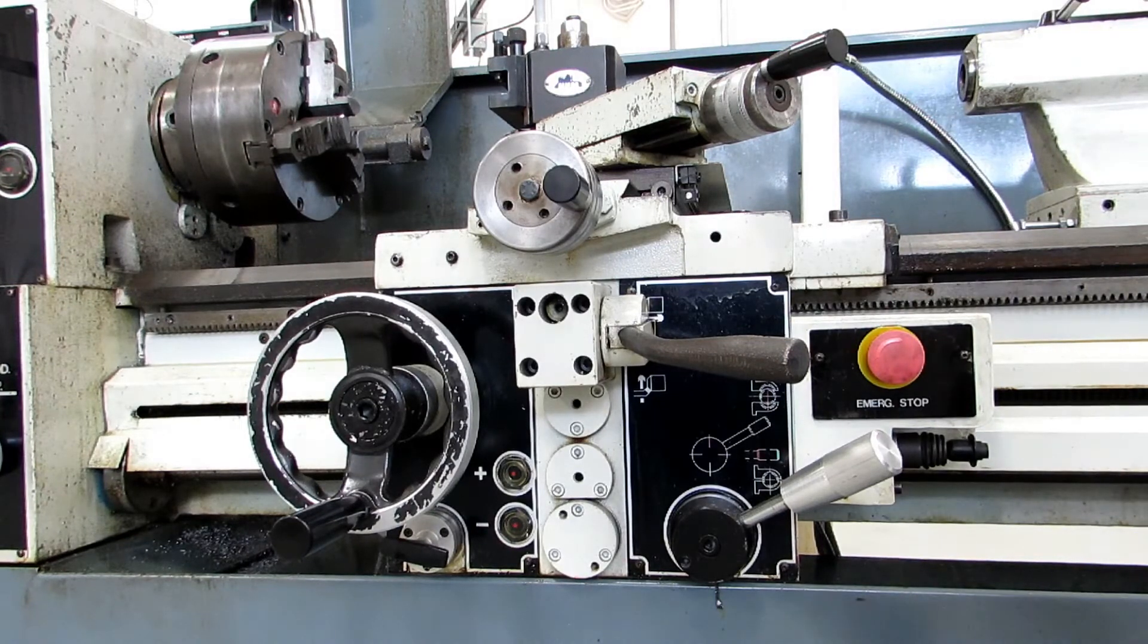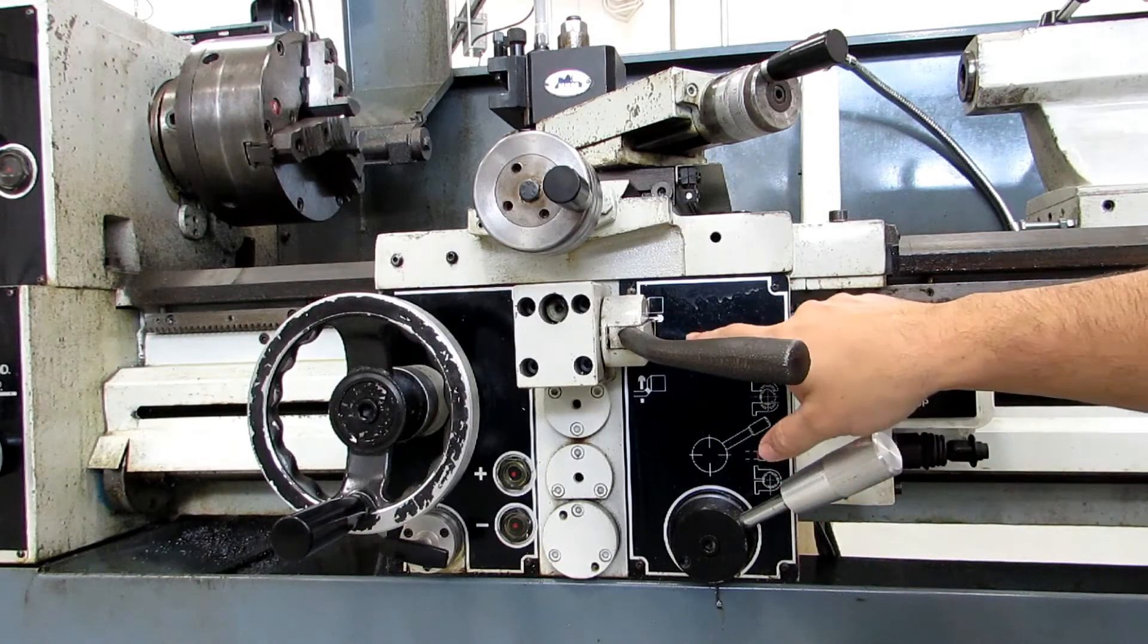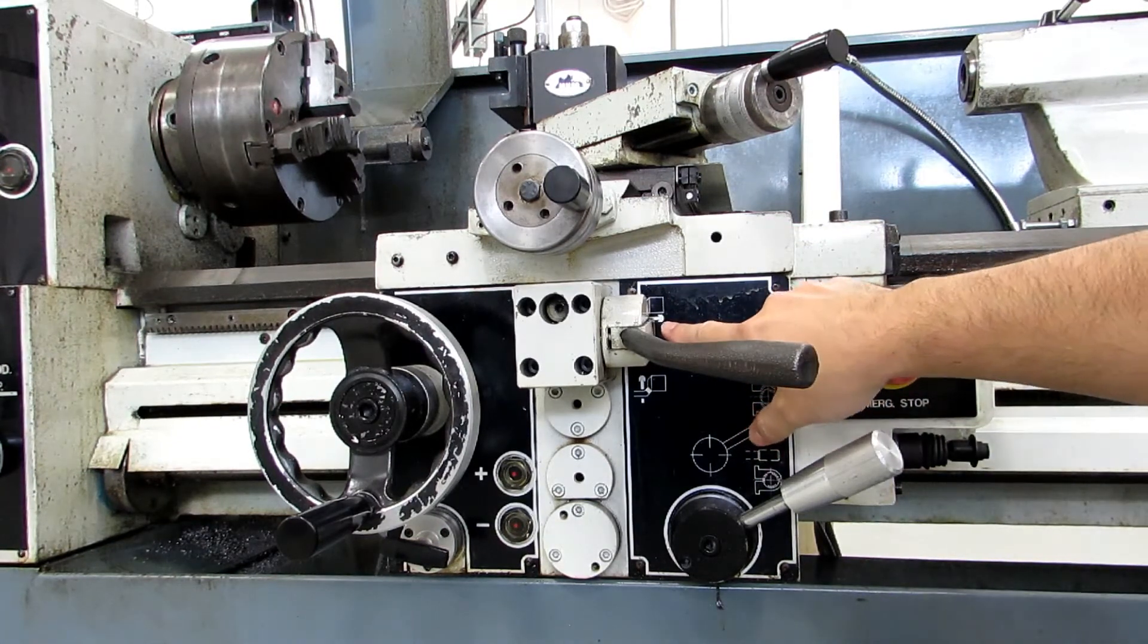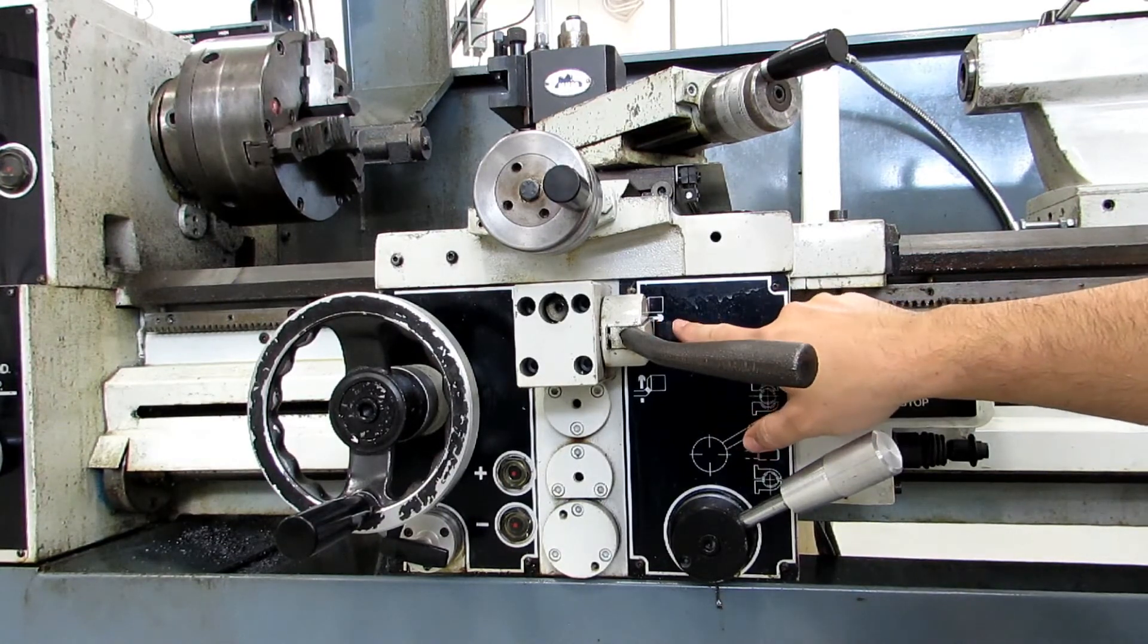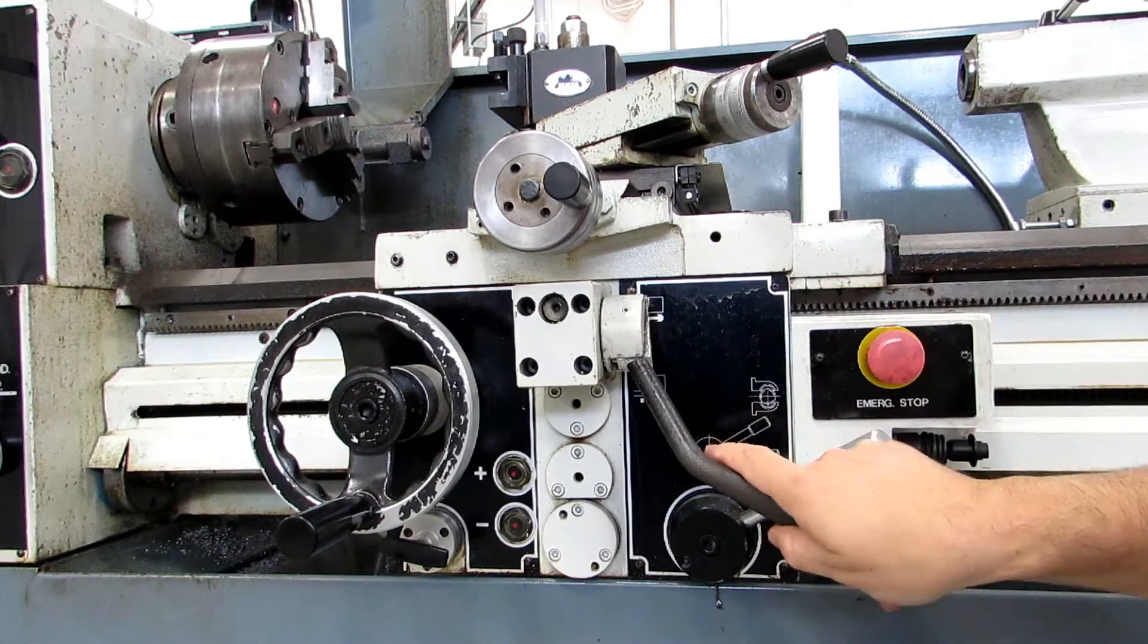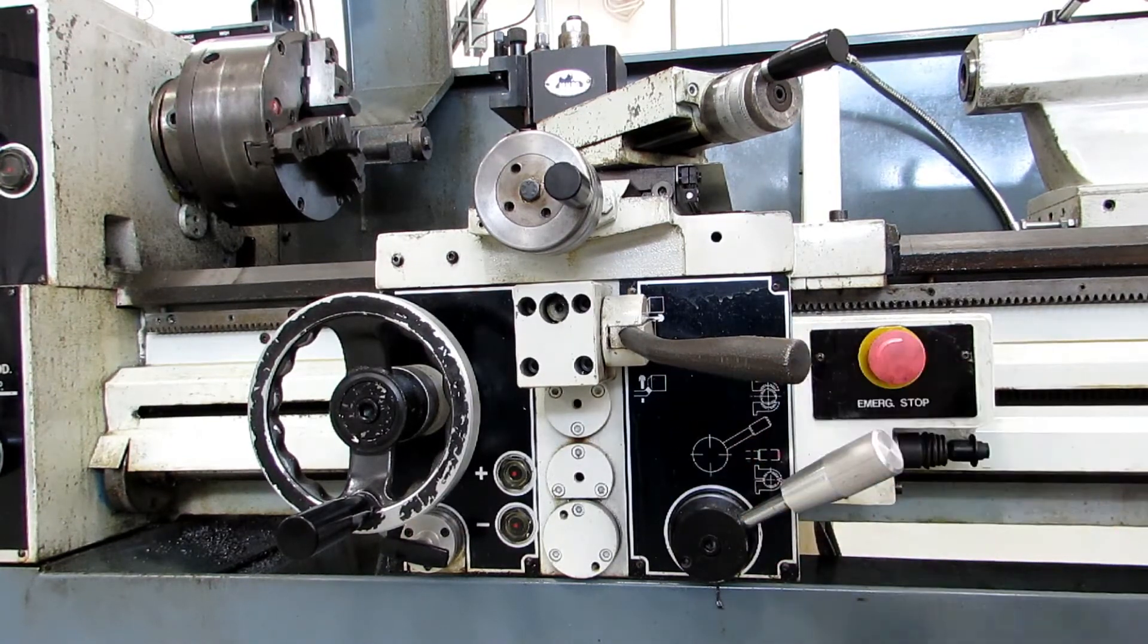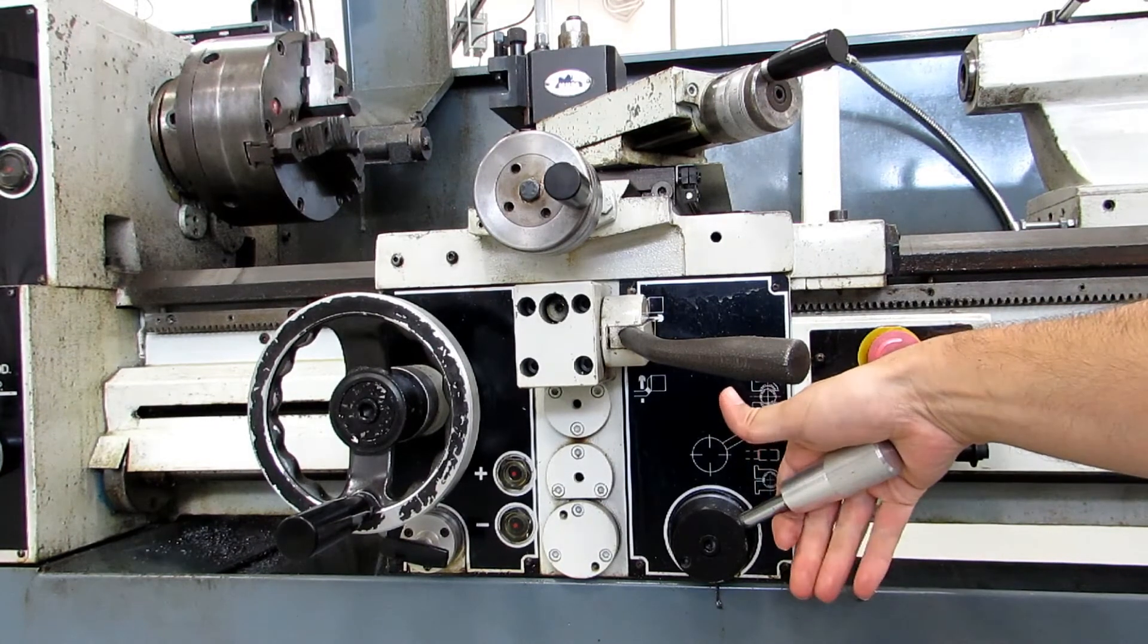Now, as far as the other controls, this handle engages your power feed, and you've got a couple of options. You can move it up, and it will be longitudinal feed. There's a picture here that you may or may not be able to see on the camera that has an arrow moving along the part, just like on your feed rate chart. If you move it down, that is your cross feed. So, you've got a picture down here that shows the arrow moving across the part, just like on your feed chart.